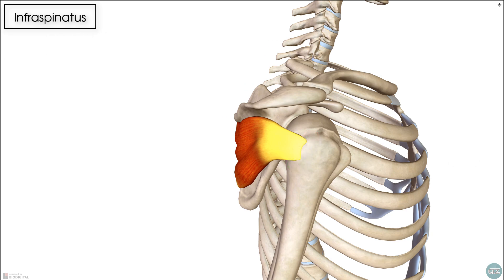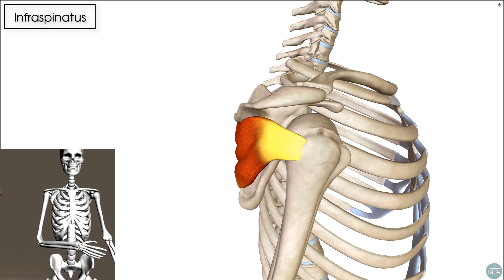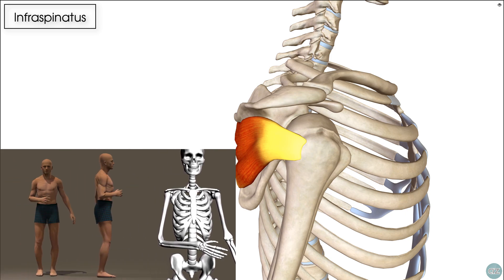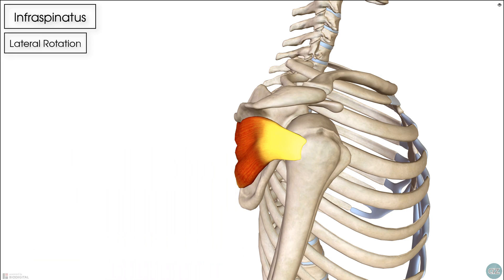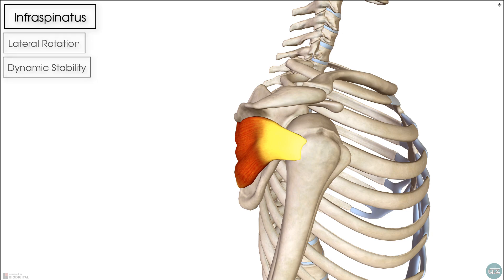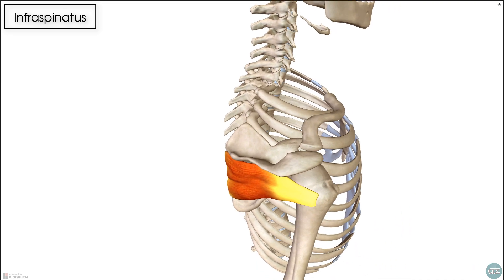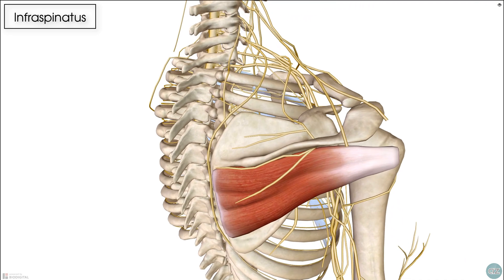In terms of its action, in isolation the infraspinatus muscle creates lateral rotation of our arm at the shoulder. However, in real terms, this muscle works with the other rotator cuff muscles to produce dynamic stability at the shoulder joint, so our shoulder remains stable whilst we're moving our arm.